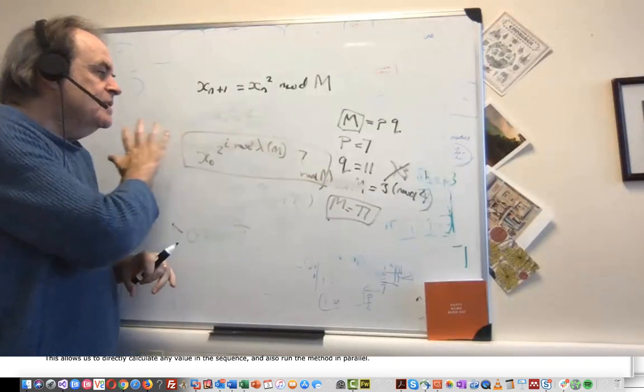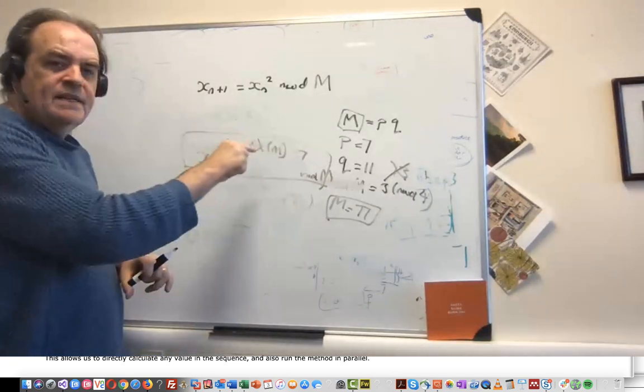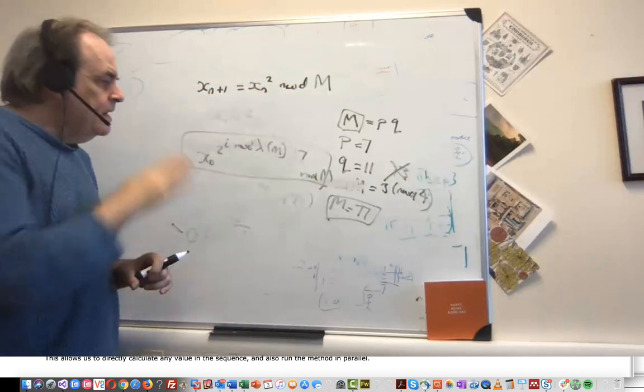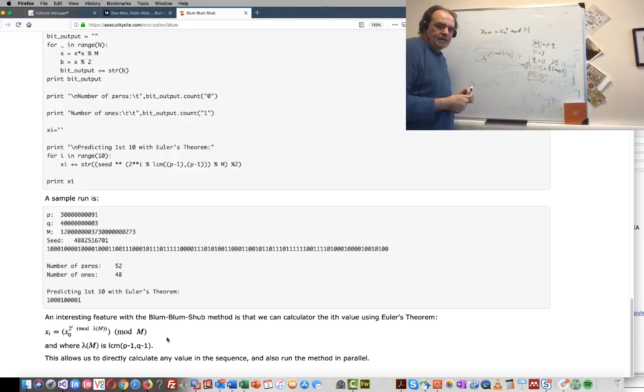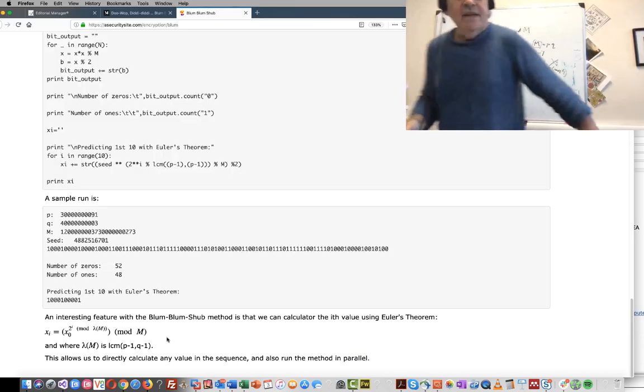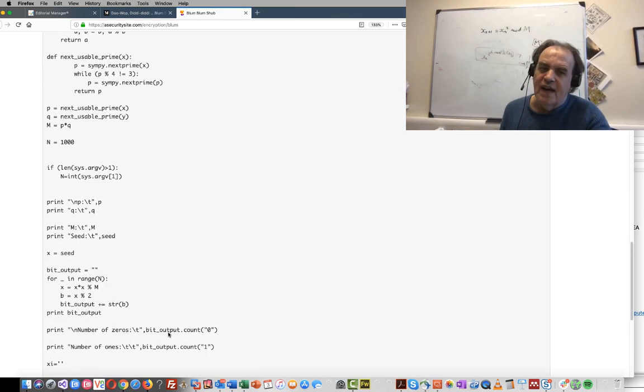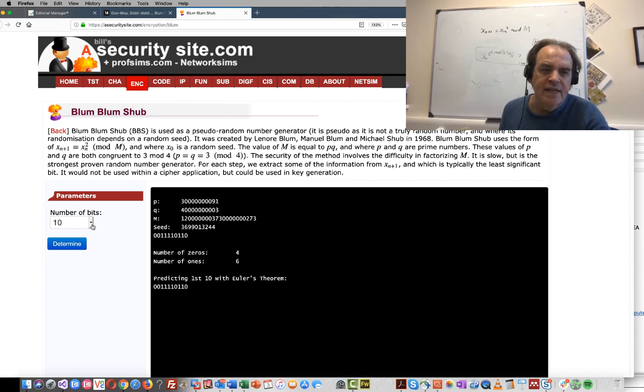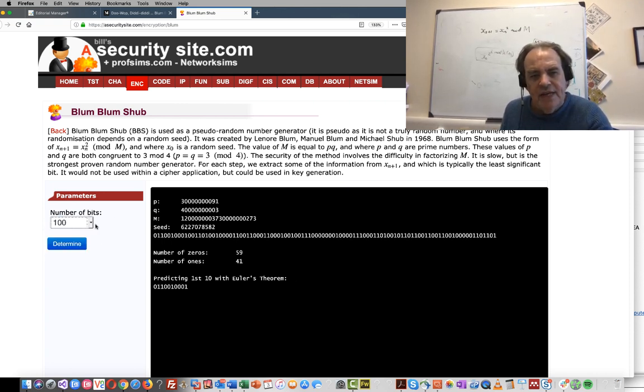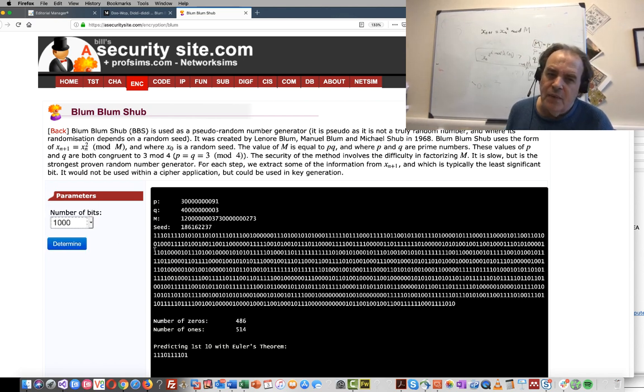So the great advantage with this is that we can actually predict any future number purely with this mathematical equation. Okay, so this just shows an example. You can try some examples here. Eventually, if we generate enough ones and zeros, we should be able to determine whether it is truly random or not.